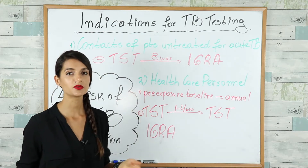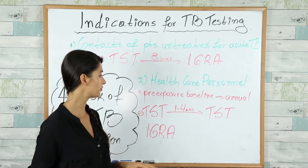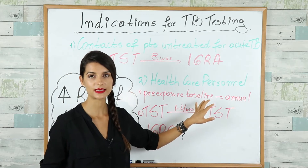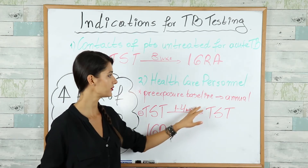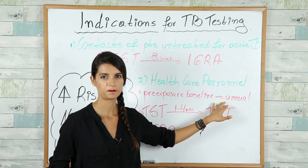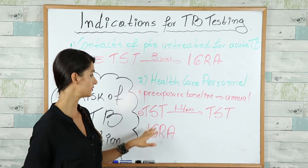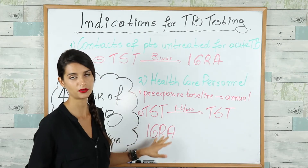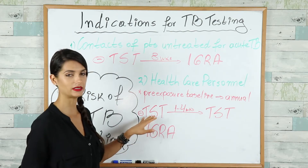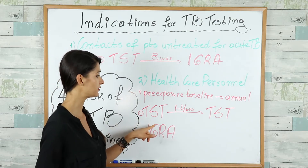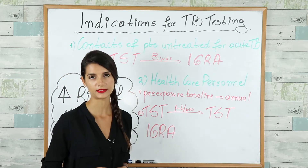The other group at risk of new infection is healthcare personnel. We perform pre-exposure baseline tests before they start employment and then test annually. Guidelines recommend either the TST or IGRA test, but if you start with the TST and the first one is negative, consider repeating it in one to four weeks.